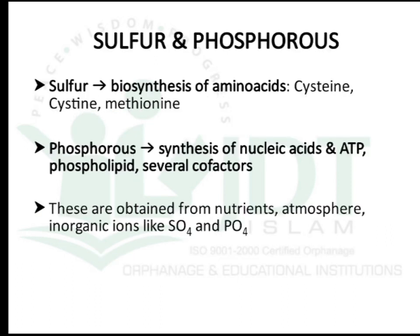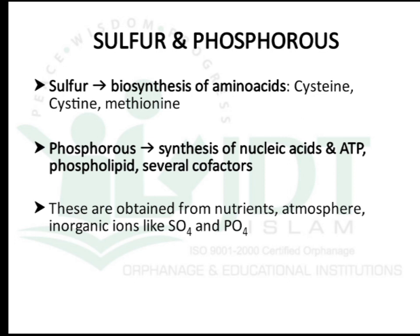Sulfur and phosphorus are also macronutrients. Sulfur is essential for the biosynthesis of amino acids like cysteine and methionine. Phosphorus is required for the synthesis of nucleic acids, ATP, phospholipids, and several cofactors. These are obtained from nutrients, the atmosphere, and from inorganic ions like sulfate and phosphate.